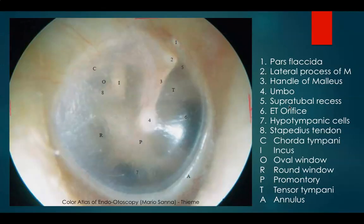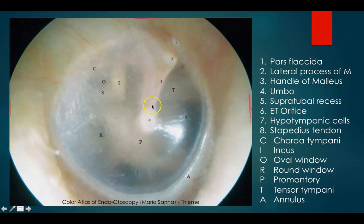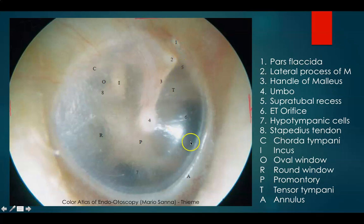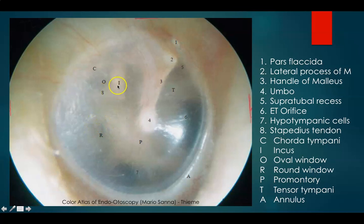This is the picture of a normal ear. One is pars flaccida, two is the lateral process of malleus, three is handle of malleus, four is umbo. Here you can see the cone of light. Six is eustachian tube orifice, T is tensor tympani, five is supratubal recess above the eustachian tube, P is promontory, seven is hypotympanic cells, R is round window niche, eight is your stapedial tendon, I is incus, O is oval window, and C is chorda tympani.